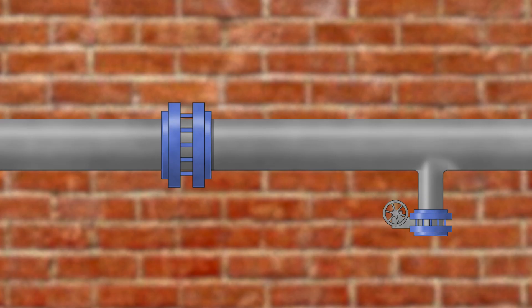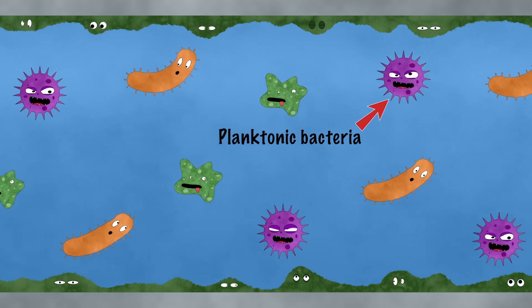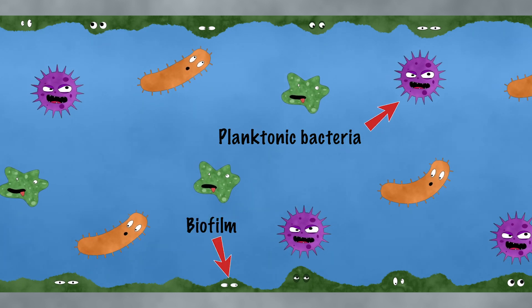The presence of bacteria in water circuits is inevitable. Microorganisms are either free, known as planktonic, or grouped together in a biofilm stuck to the surface of the pipes.